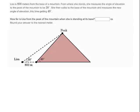Lisa is 800 meters from the base of a mountain. From where she stands, she measures the angle of elevation to the peak to be 38 degrees. She then walks to the base of the mountain and measures the new angle of elevation, this time getting 49 degrees. We want to find out how far Lisa is from the peak when she's standing at its base. What we're looking for is this length right here, which we'll mark with a question mark.